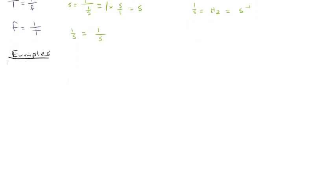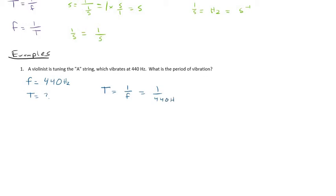So let's try some examples for a minute. Our first example is that a violinist is tuning the A string, which vibrates at 440 hertz. What is the period of vibration? So we are given that the string vibrates at 440 hertz, and you'll need to recognize from the units that this is a frequency, and we are asked for the period. Well, we simply find the period by doing one divided by the frequency, which is one divided by 440 hertz.